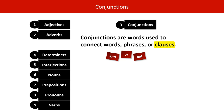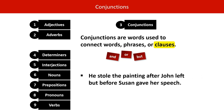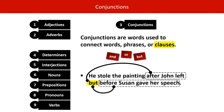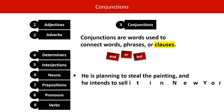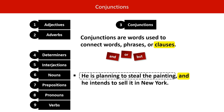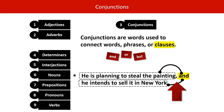Finally, let's see how conjunctions join clauses. 'He stole the painting after John left but before Susan gave her speech.' But is our conjunction joining those two clauses. 'He is planning to steal the painting, and he intends to sell it in New York.' These are independent clauses — they could stand alone as sentences. When a conjunction joins two independent clauses, the conjunction is preceded by a comma.